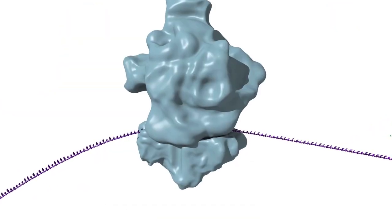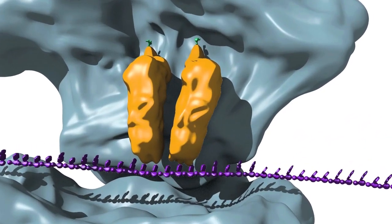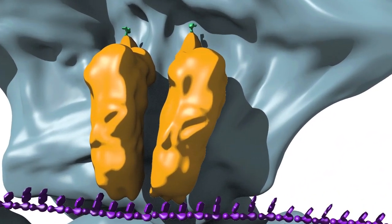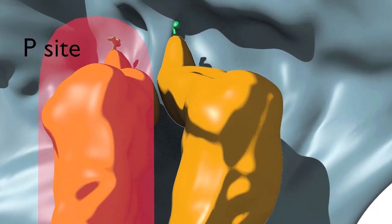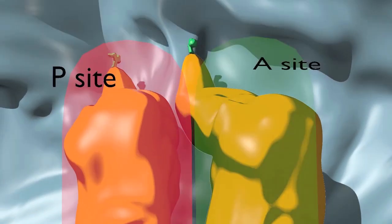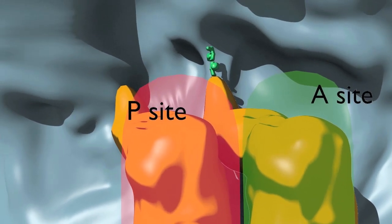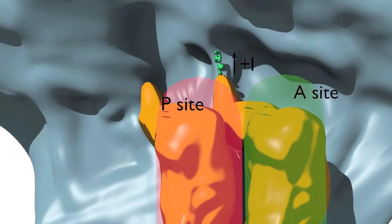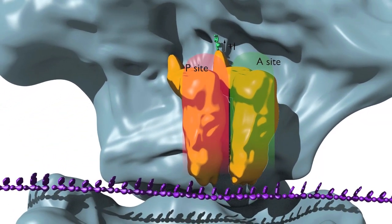Once the tRNA selection step has taken place, peptide bond formation is catalyzed in the large subunit. In this step, the growing polypeptide chain is transferred from the peptidyl tRNA to the nucleophilic amine of the A site tRNA amino acid. This transfer extends the polypeptide chain by one amino acid. At this stage, the extended peptide is attached to the tRNA in the A site.